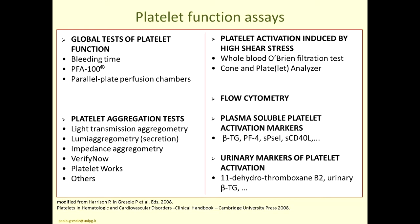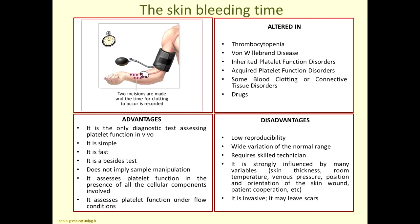I will concentrate on methods most useful for diagnosing inherited platelet function disorders. The first is the skin bleeding time — the most ancient test for the study of hemostasis, dating back over one century. The test measures the time taken for a wound inflicted on the forearm to stop bleeding. It is altered in patients with inherited platelet function disorders, but also in thrombocytopenia, von Willebrand disease, acquired platelet function disorders, certain blood clotting or connective tissue disorders, and is affected by many different drugs.